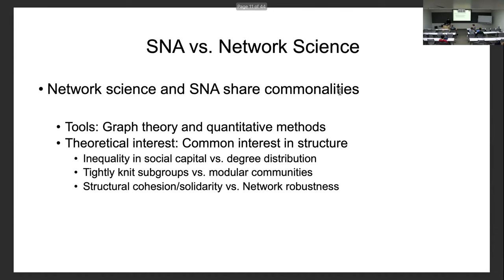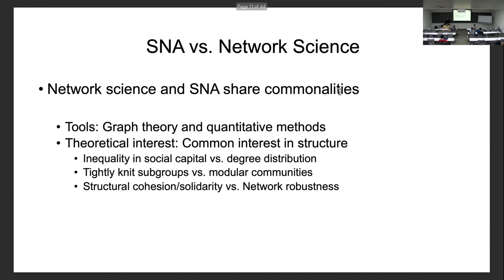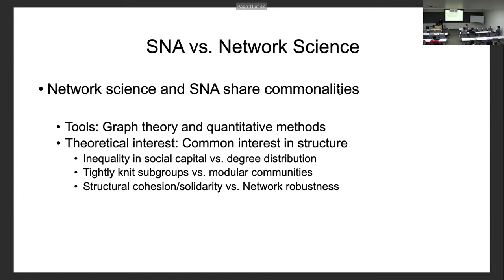There's also the notion of how strong or durable the network is — if you start removing nodes or links, how far do you need to go before the overall network unravels or splits apart? In social network analysis, this has implications for processes like group splitting versus solidarity. On the network science side, it's couched in terms of network robustness — for example, preventing cascading failures in a power grid.